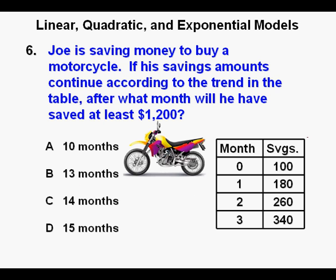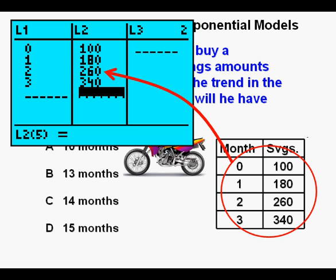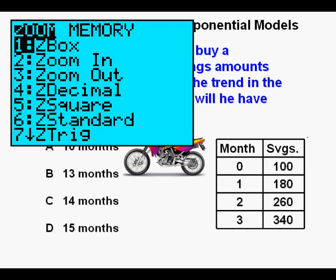Problem 6. Joe is saving money to buy a motorcycle. If his savings amounts continue according to the trend in the table, after what month will he have saved at least $1,200? The first thing we'll do is ENTER our points. We go to STAT ENTER. Enter the months and savings here in columns under L1 and L2.